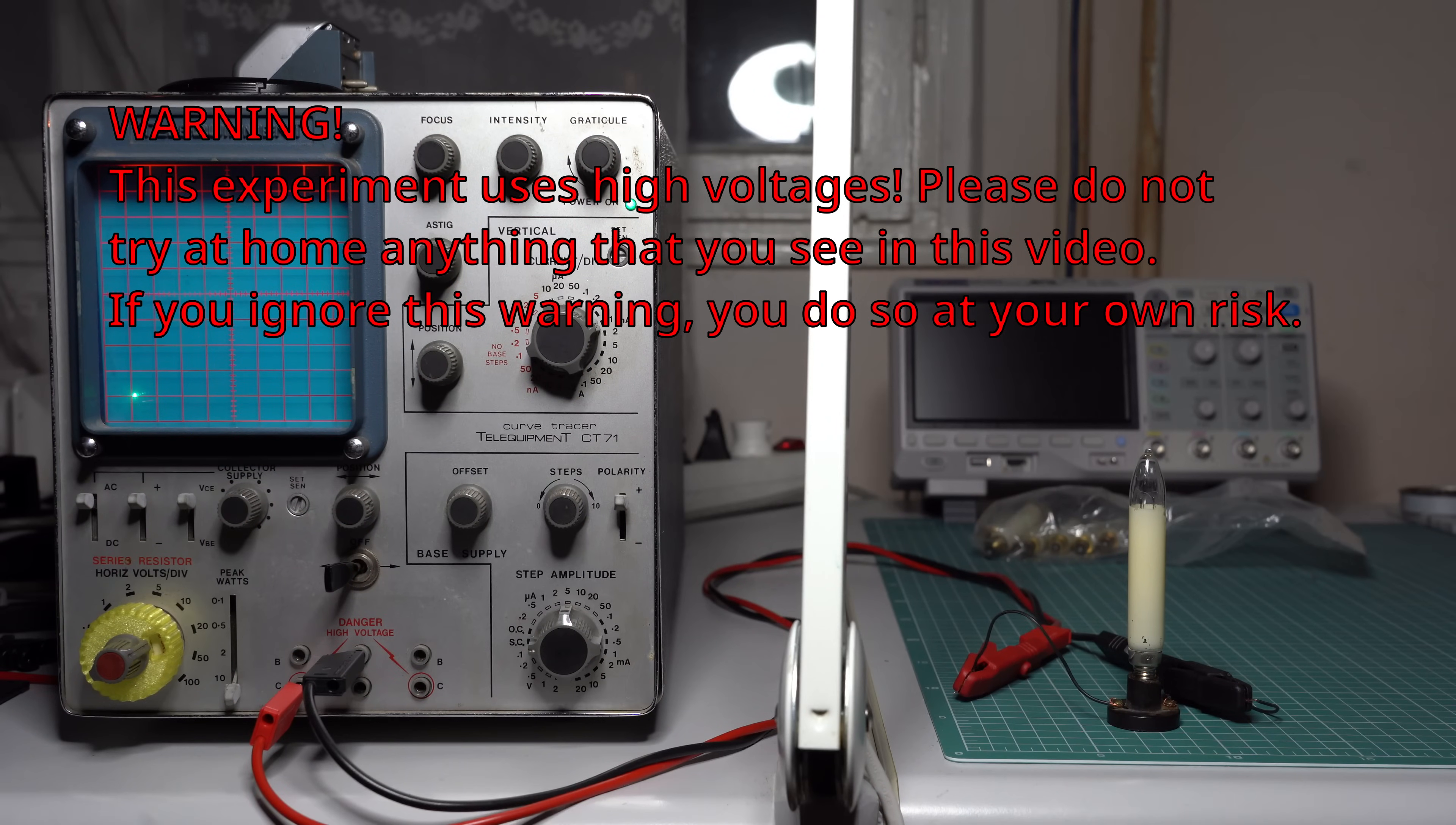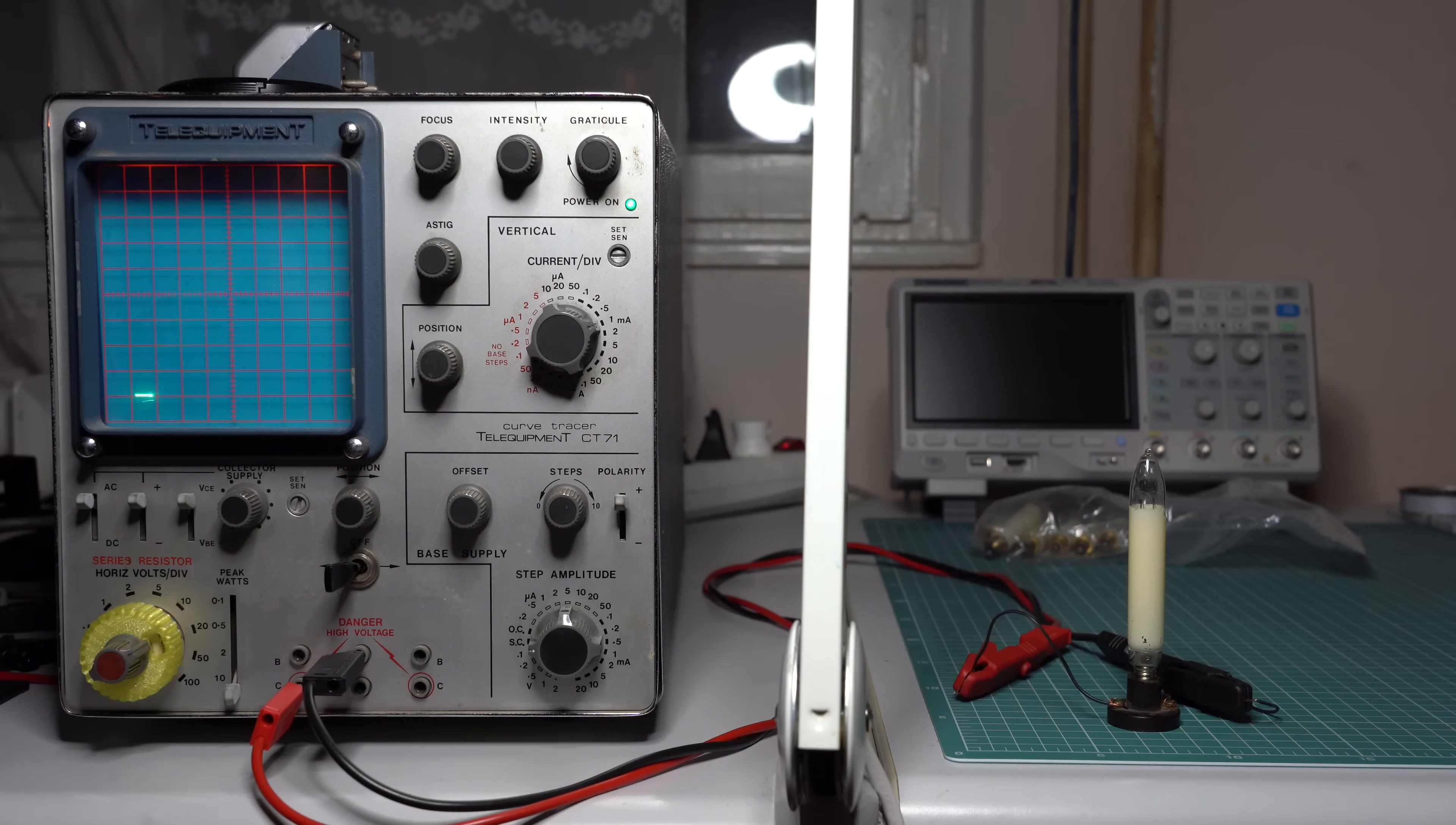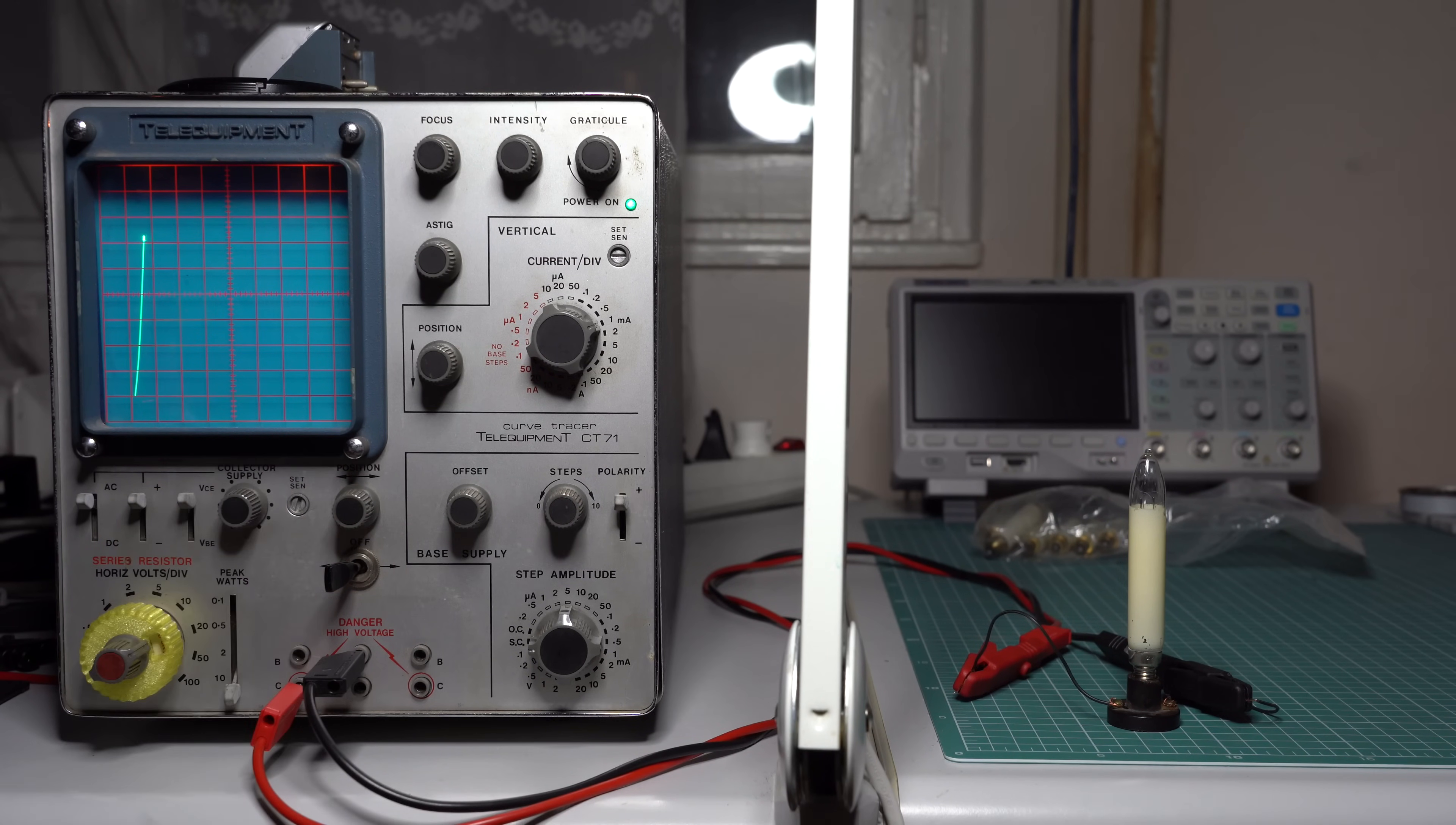So we are at 50 volts per division and by slightly increasing the voltage you can see that the characteristic looks like a horizontal line, which means that the light bulb is basically open circuit. We are at 50 volts, let's increase the voltage. 100 volts, still open circuit. 150, still open circuit. 200 volts and as you can see it's shorted out.